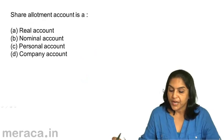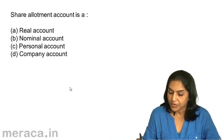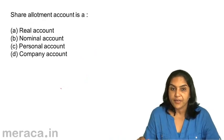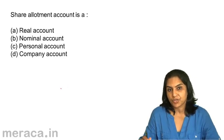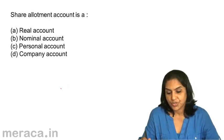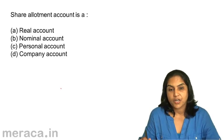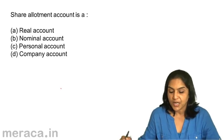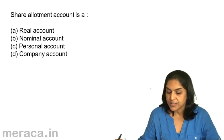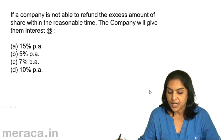Share Allotment Account is: A) Real Account, B) Nominal Account, C) Personal Account, D) Company Account. Share Allotment Account is a personal account. The correct answer is C.